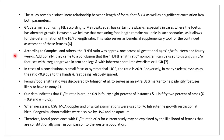The study done by Campbell showed that the femur length to foot length ratio was approximately 1 across all gestational ages between 14 and 40 weeks. They concluded that the femur length to foot length ratio nomogram can be used to distinguish between fetuses with irregular growth and inherent short-limbed dwarfism or IUGR. In constitutionally small fetuses or symmetrical IUGR, the ratio is greater than or equal to 0.9, whereas in skeletal dysplasia the ratio is less than 0.9 due to hands and feet being relatively spared. The femur-foot length ratio was also found by Johnson to serve as an extra USG marker for identifying fetuses likely to have trisomy 21. Our data indicates the femur to foot length ratio is around 0.9 in 48% of instances and 1 in 52% of instances.